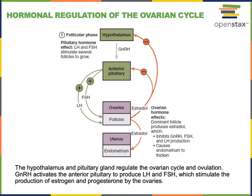Estradiol is produced in increasing levels during the follicular phase of the ovarian cycle and has effects all through the body, including in the uterus where it stimulates the growth of the inner lining of the uterus, known as the endometrium. The production of estradiol is regulated by a negative feedback control mechanism, where estradiol binds to receptors in cells of the hypothalamus and anterior pituitary gland to inhibit the production of GnRH, LH, and FSH.